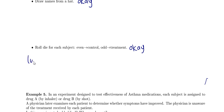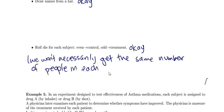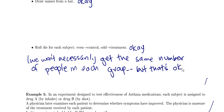Someone has pointed out that with rolling a die, you won't necessarily get the same number of people in each group, although it should be roughly about half and half. But that's okay — it's not actually important in statistics to have the same number of people in each group. You can have different numbers in the two groups.